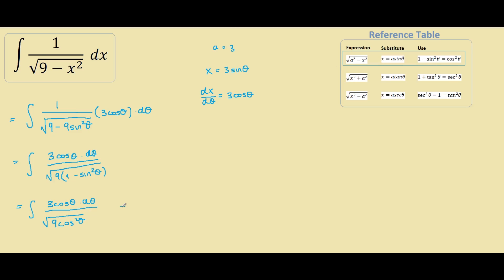As you can see, everything cancels out nicely. After we take the square root of this term, we are left with 3 cos theta. Both of them cancel out and we are left with the integral of dθ, which simply results in theta plus C.